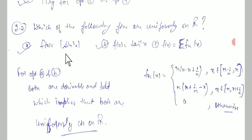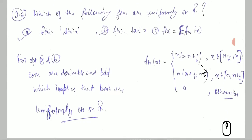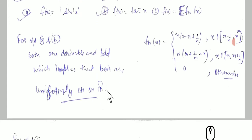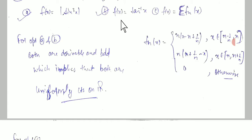The second question asks which functions are uniformly continuous. The first option is f(x) = sin³x, the second is tan⁻¹x. For both options a and b, the functions have bounded derivatives, which implies by a direct property that they are uniformly continuous on ℝ. From their graphs it is also easy to see they are uniformly continuous. You can refer to the playlist video for graph-based understanding.